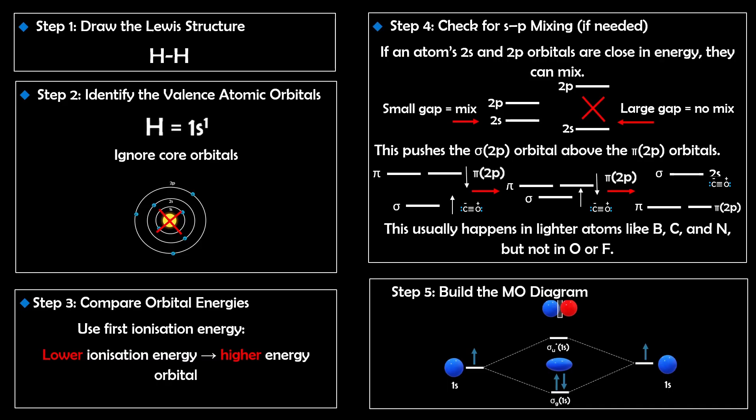Step 4: Check for sp mixing. If an atom's 2s and 2p orbitals are close in energy, they can mix, and this pushes the sigma 2p orbital above the pi 2p orbitals. This usually happens in lighter elements like boron, carbon, and nitrogen, but not in heavier elements like oxygen and fluorine.